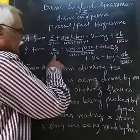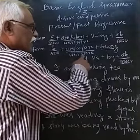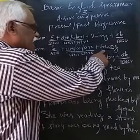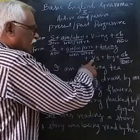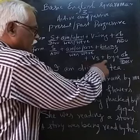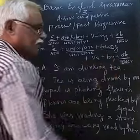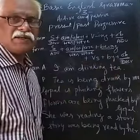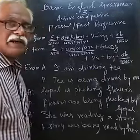In the past progressive passive, the subject plus was/were, then the same being is added, plus verb-ing, plus by, and the doer is the object.